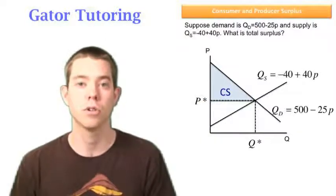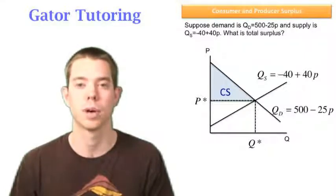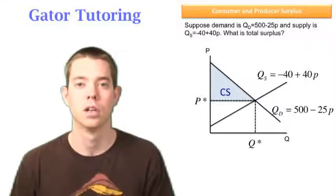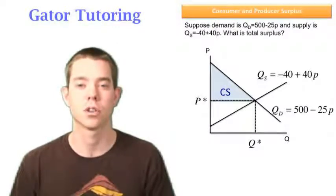All those units are valued higher than it cost the consumer to buy it, which is the price. So that's how we think about this. Demand represents value. Supply represents cost.